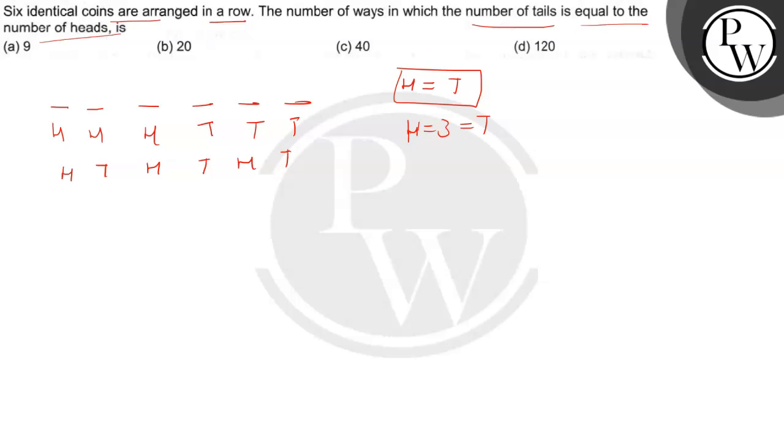Let's see the total number of ways we can arrange six coins in six places. That's six factorial. Now, three heads are the same, they are identical. And three tails are identical. So we divide by three factorial times three factorial.